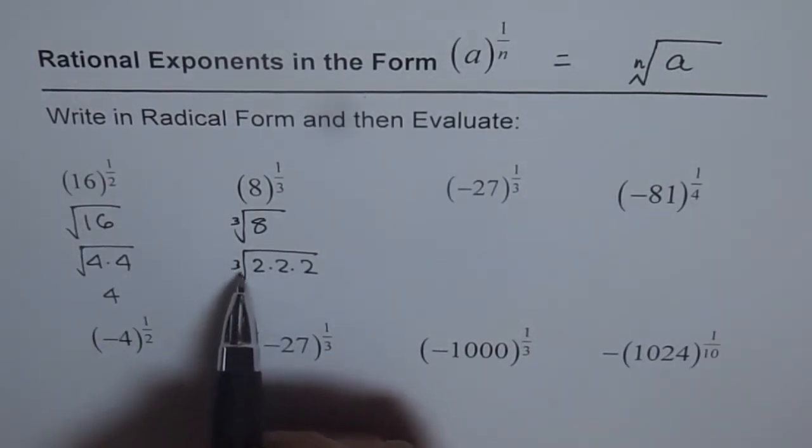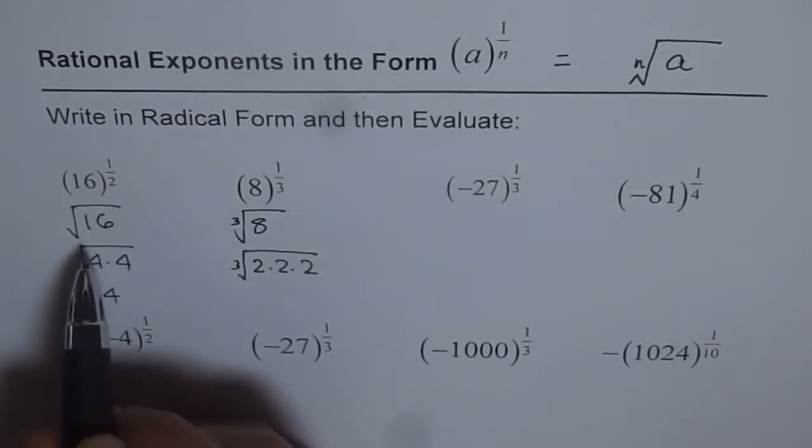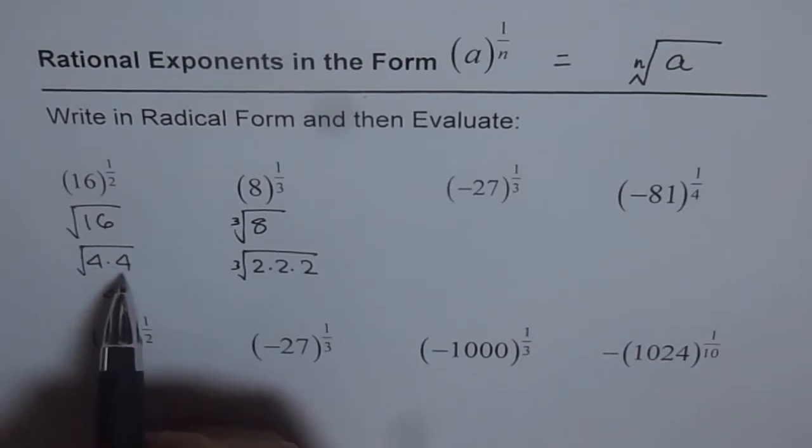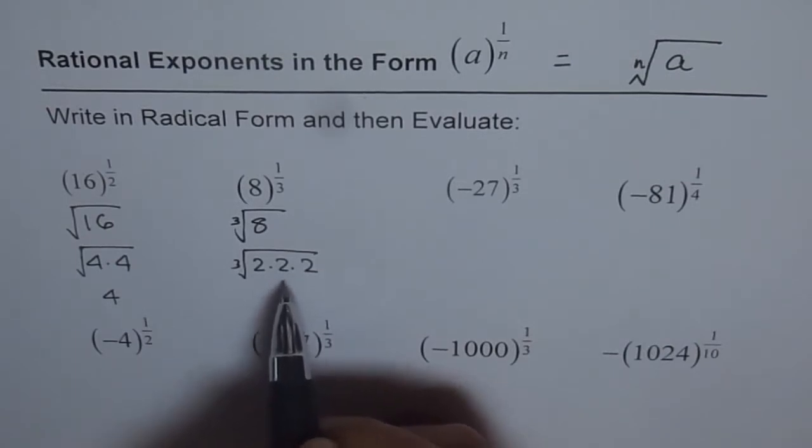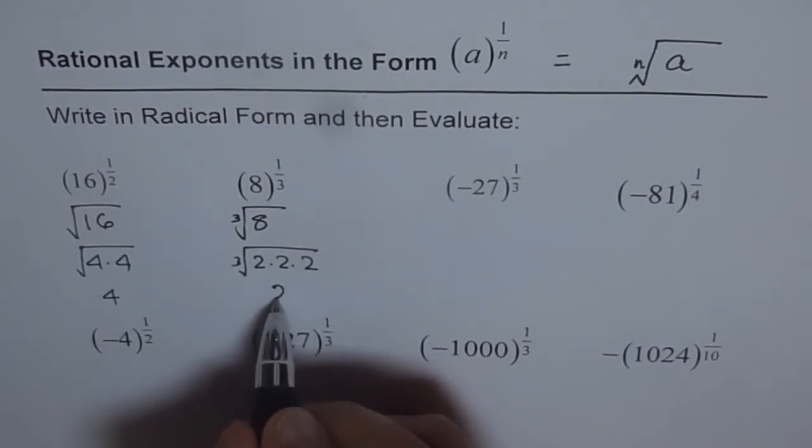Third root really means, just as second root means two numbers, same numbers multiplied together. Square of square root will be the number itself. Here, cube of cube root is the number itself. So that is the principle which we follow here. This could be written as 2.